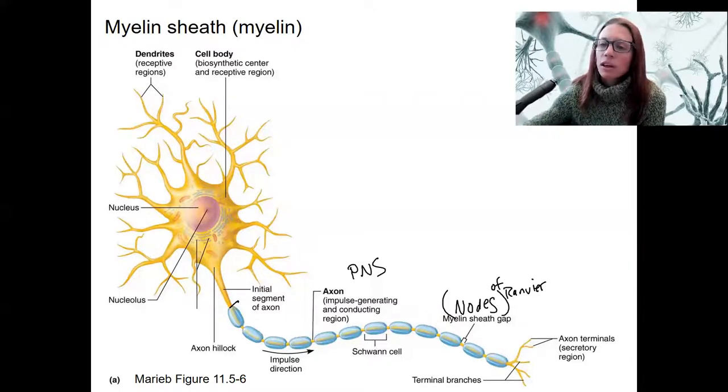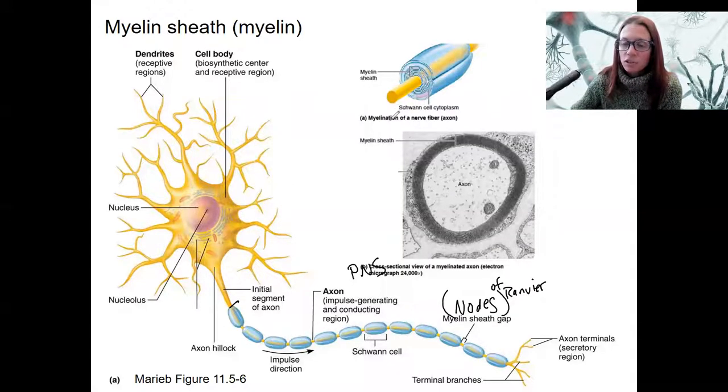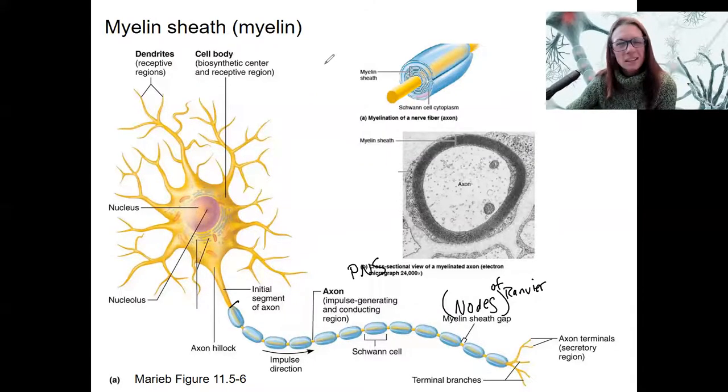Let's look at a cross-section of what's happening here. So this, again, is the peripheral nervous system. In the CNS, it would be oligodendrocytes that do something similar.